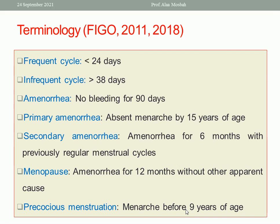If the cycle is less than 24 days, it is called a frequent cycle; if more than 38 days, it is an infrequent cycle. Amenorrhea means no menstruation for 90 days. Primary amenorrhea is absent menarche by 15 years of age; secondary amenorrhea is no menstruation for 6 months with a previously regular cycle. Menopause is amenorrhea for 12 months without other apparent cause, due to depletion of ovarian follicles. Precocious menstruation means menarche before 9 years of age.